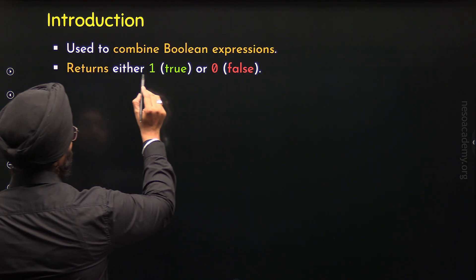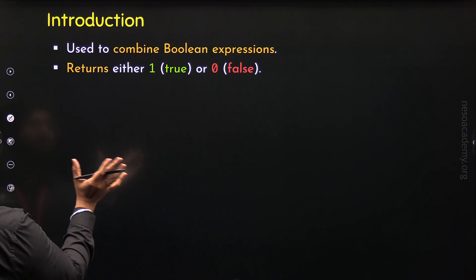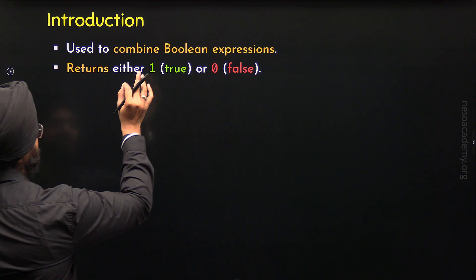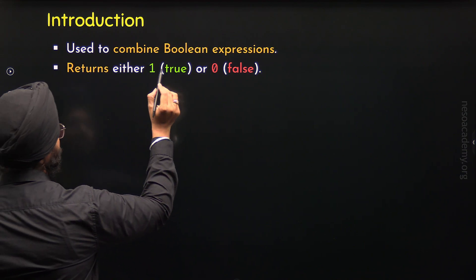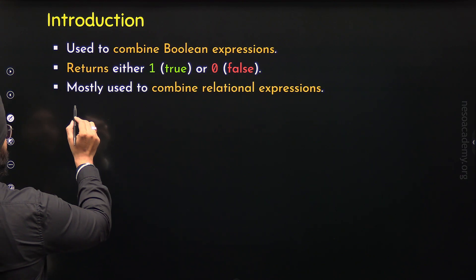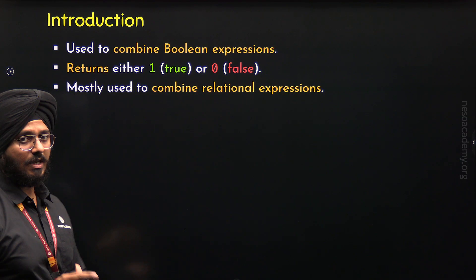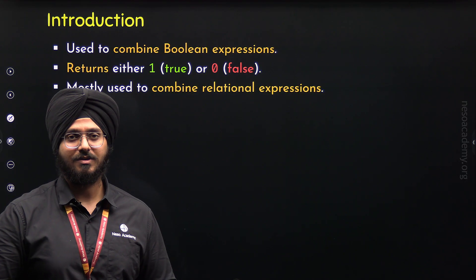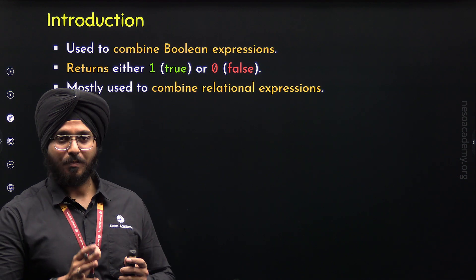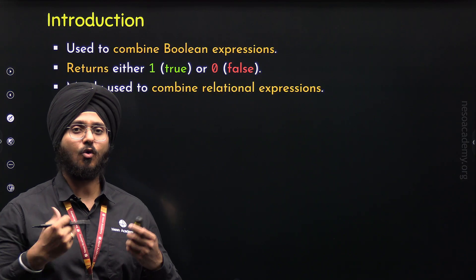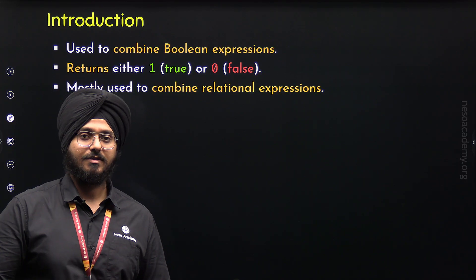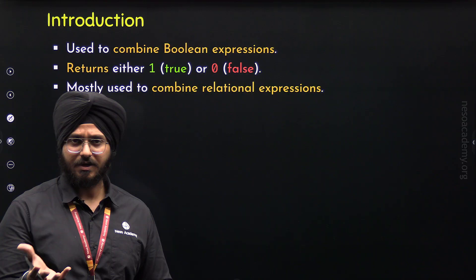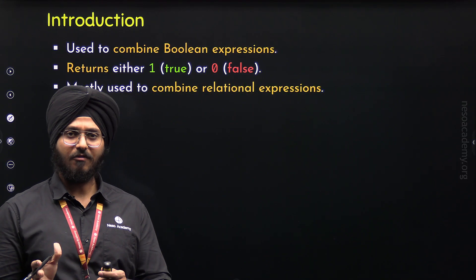A logical expression, which is an expression involving logical operators, also returns a Boolean value — either 1 or 0, where 1 represents true and 0 represents false. Mostly, logical operators are used to combine relational expressions, that is, expressions involving relational operators. That's the relationship between logical operators and relational operators. A relational expression also returns a Boolean value, so it is also a Boolean expression, and we can combine relational expressions with the help of logical operators.